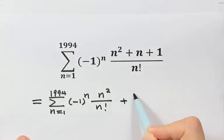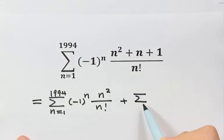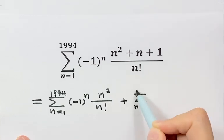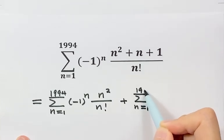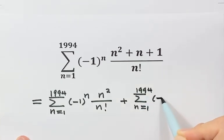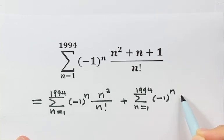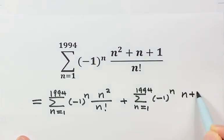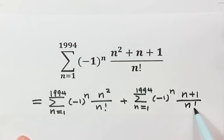So now let's see the second part. It has negative 1 to the power n, then n plus 1 on top, and n factorial on the bottom.